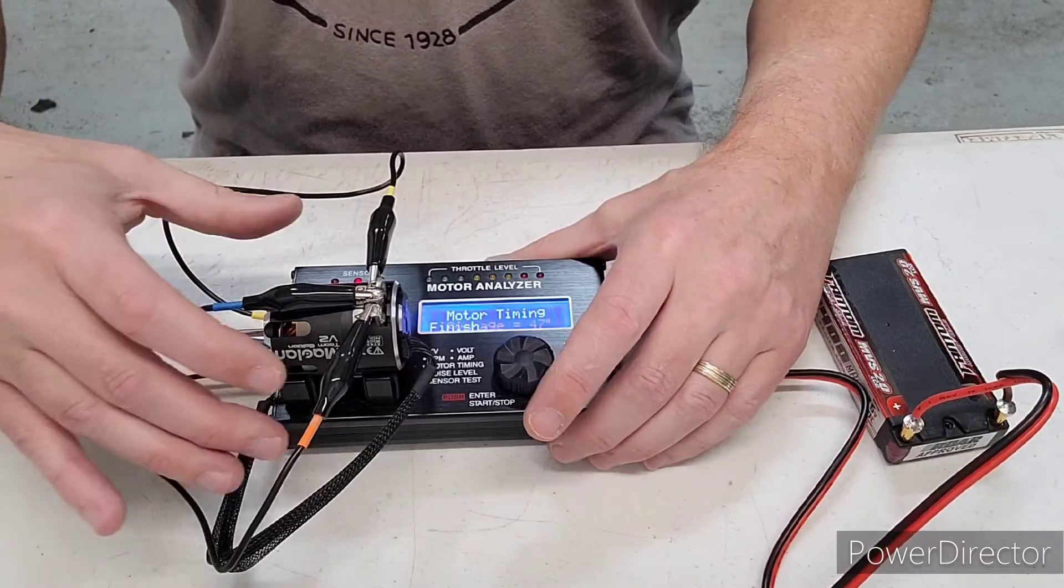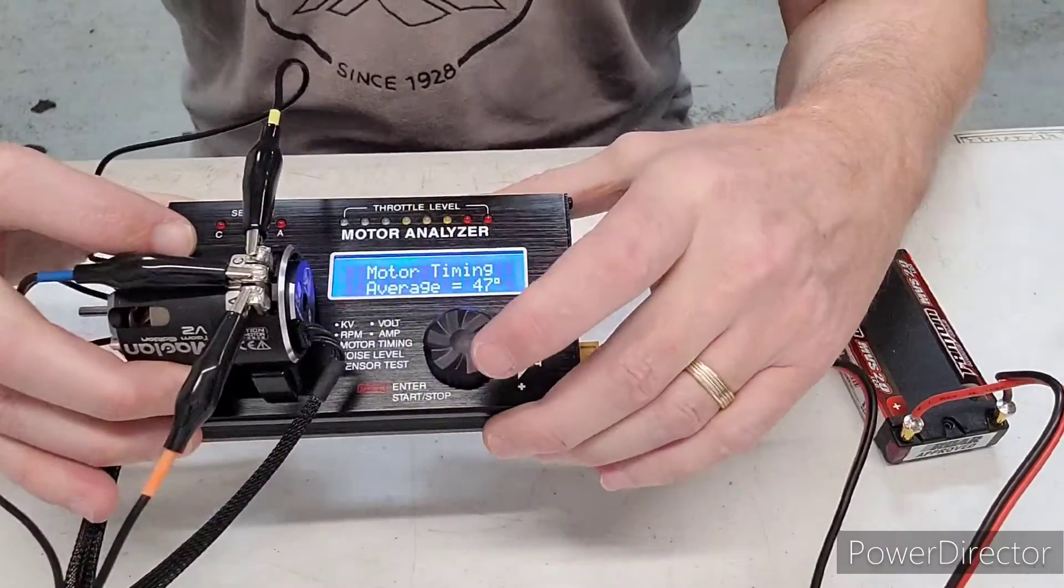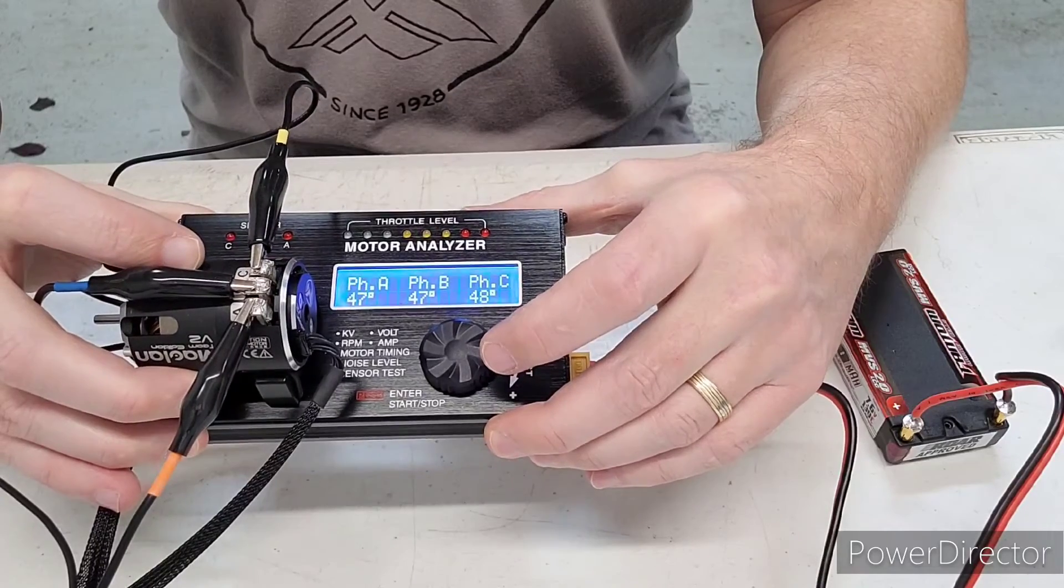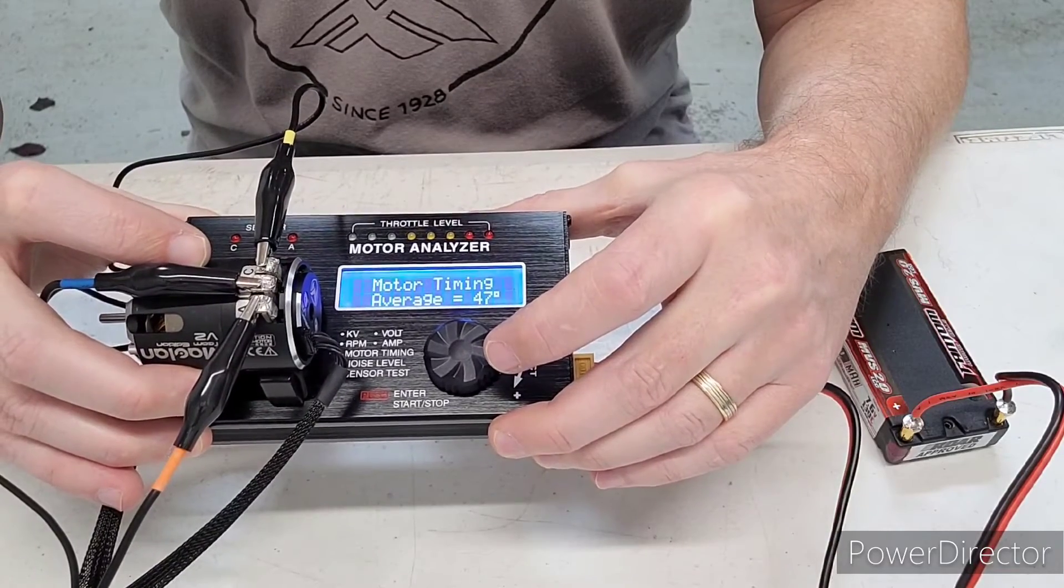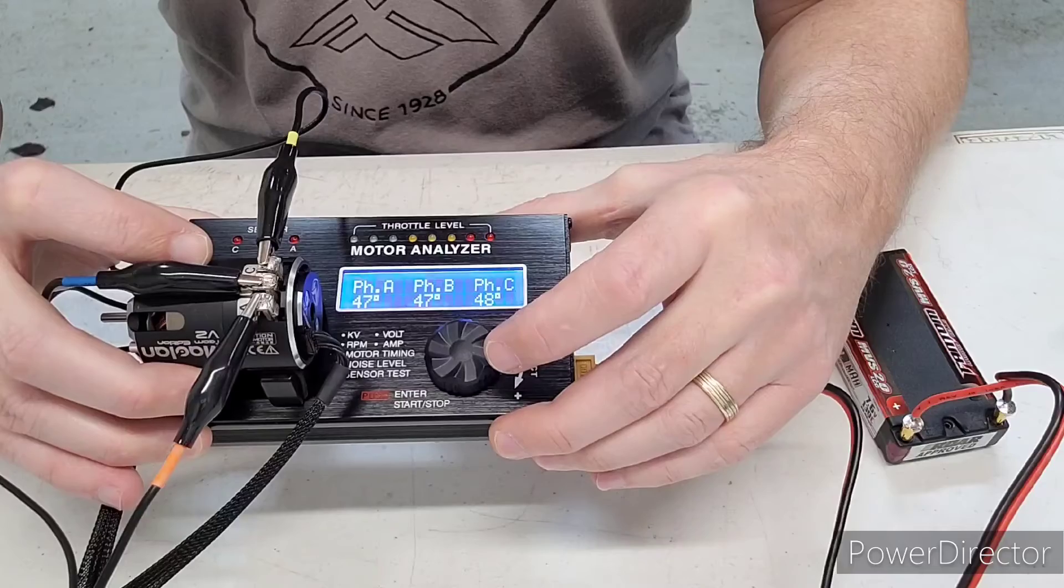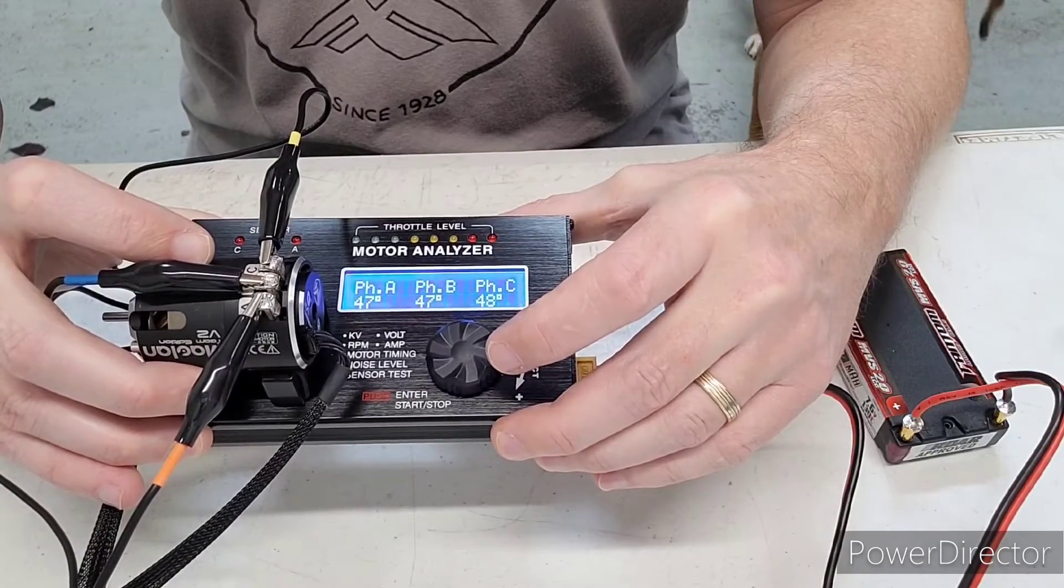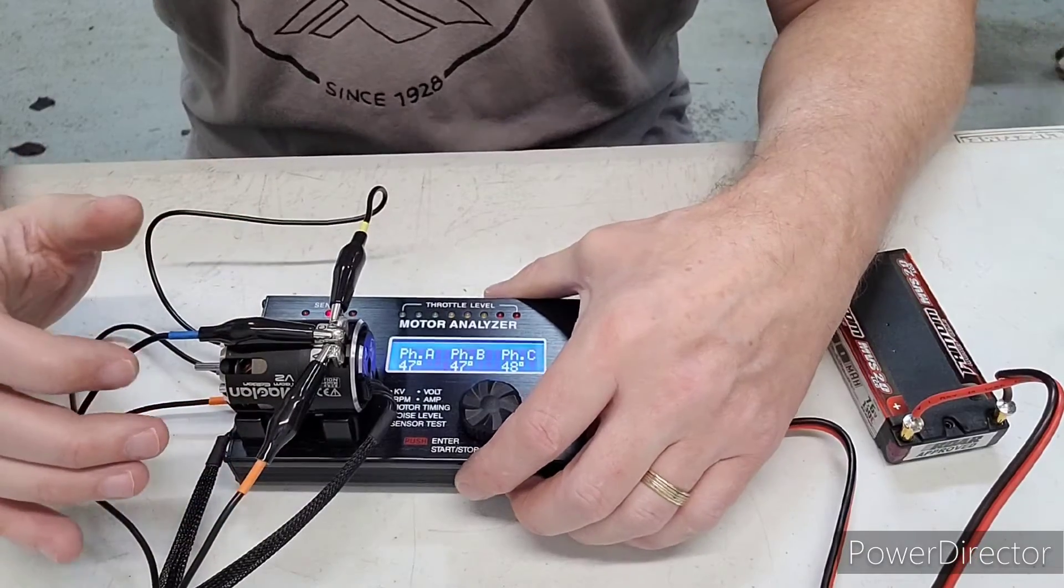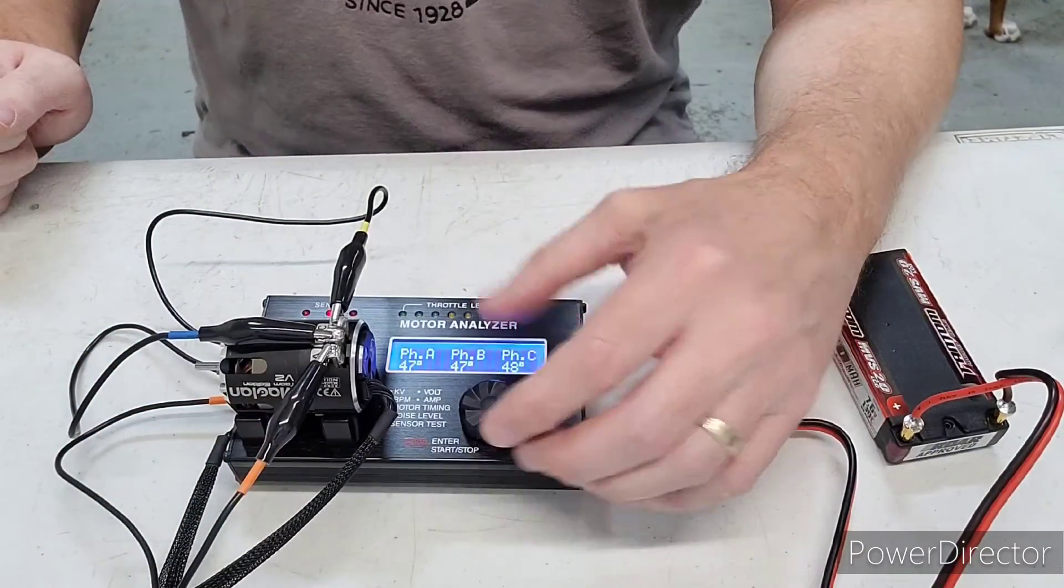All right. So then once it finishes, you'll see, it says the average is 47 degrees and each, you have one, two sensors at 47, one at 48.